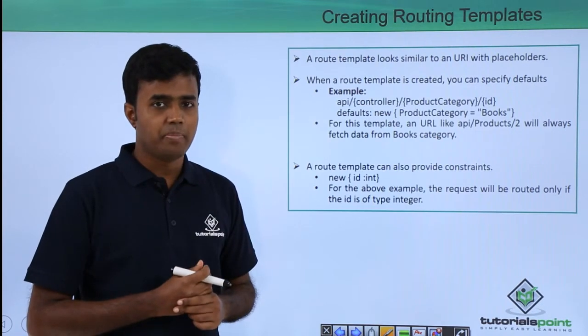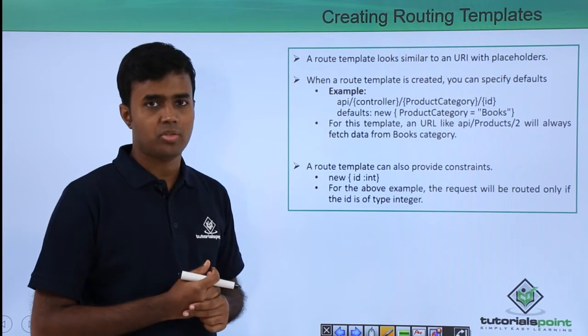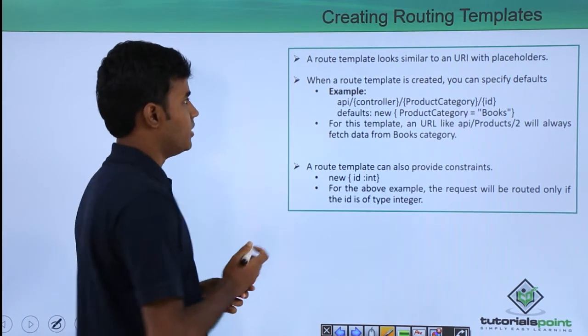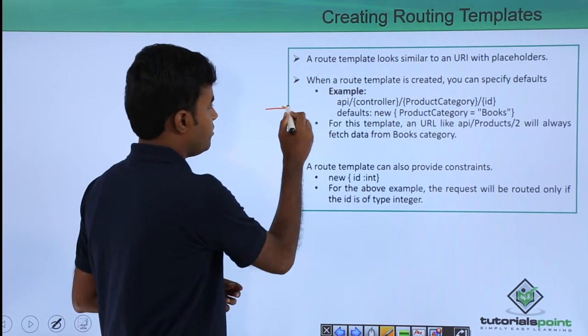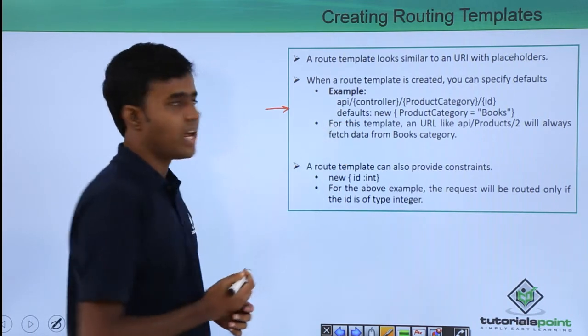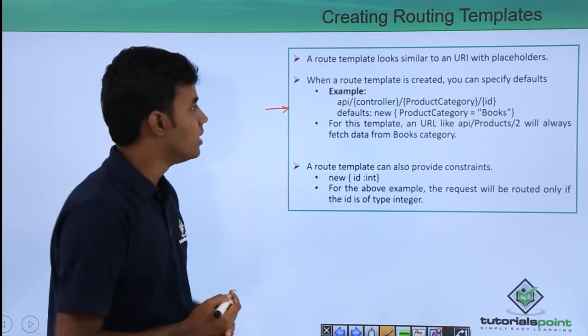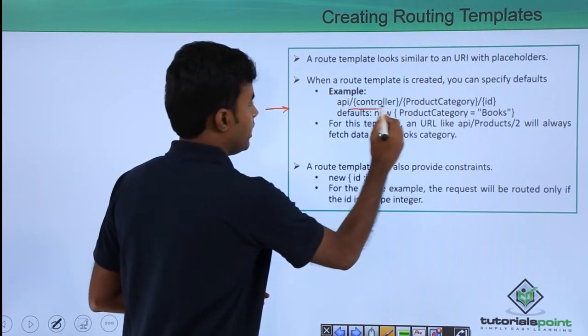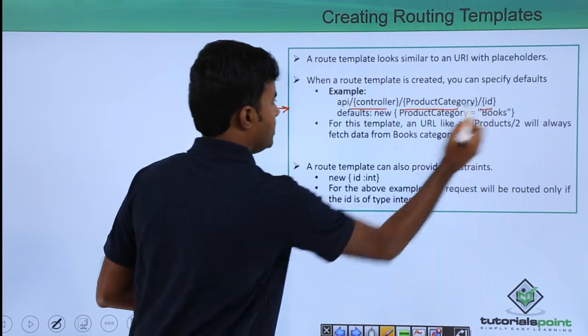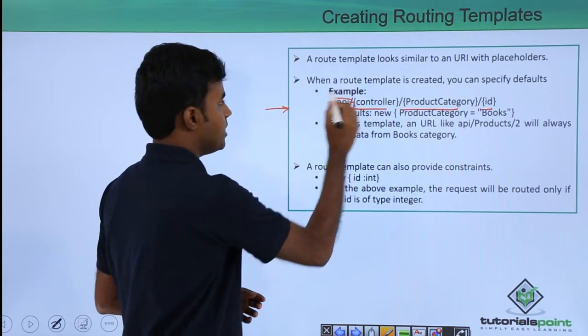A route template looks very similar to a URI with placeholders. We will see an example of that. Suppose that we have a route template similar to this: API slash controller slash product category slash ID. Note that here controller, product category, and ID are all placeholders and only API is a literal.